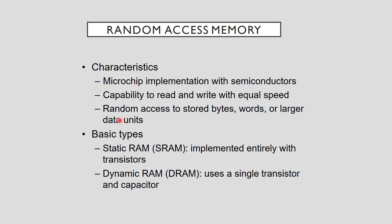RAM is fabricated in the same manner as a microprocessor, so you might assume that microprocessor clock rates are well matched to RAM access speeds. Unfortunately, this is not the case for many reasons, including that reading and writing in parallel requires additional circuitry, and when RAM and microprocessors are on separate chips there are delays when moving data from one chip to another.